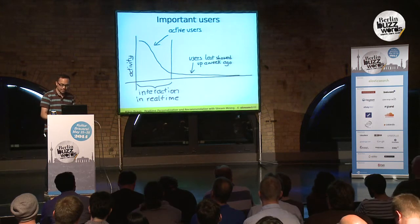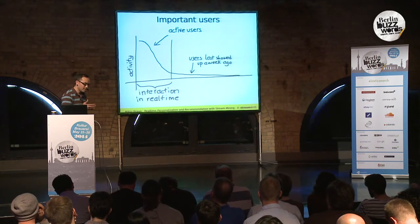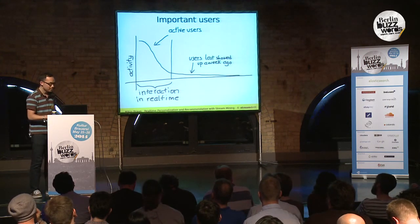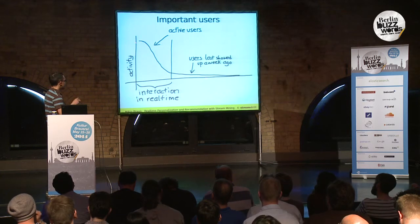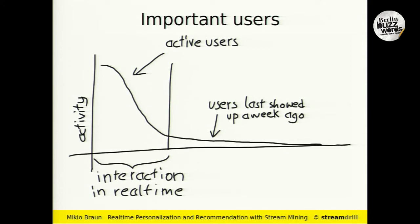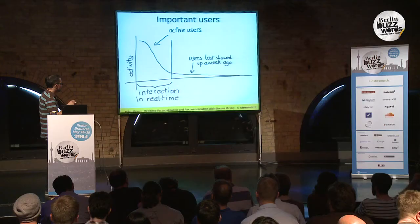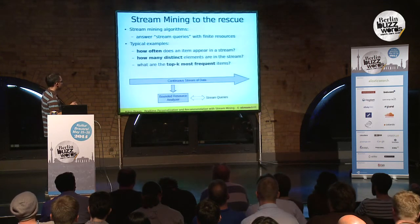Why can you live with approximate results for user data? The distribution of user activity usually looks like this: a few users interact a lot, and many just show up once a week. You really want to spend your computing time on the most active users — those who are actually buying things. It doesn't make sense to maintain a whole cluster just to store precise results for infrequent users, or to spend a lot of money speeding it up.